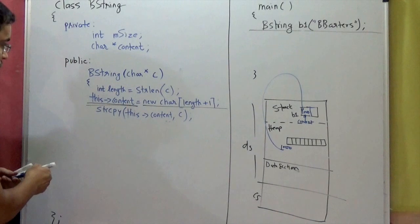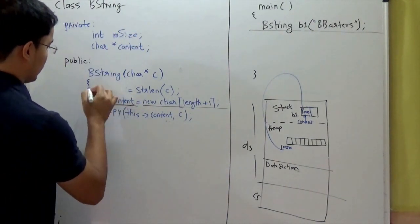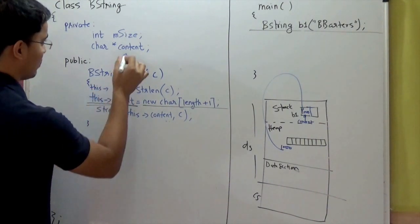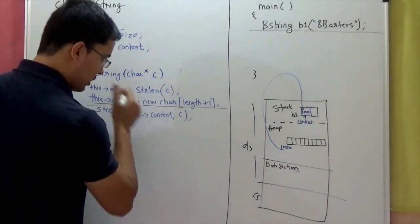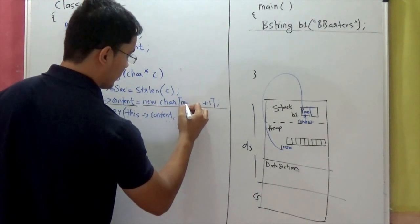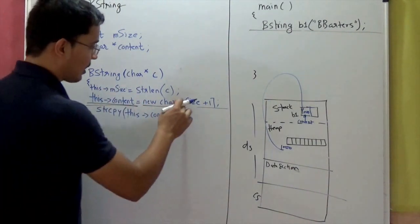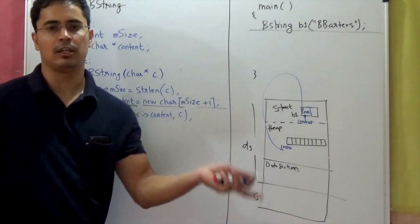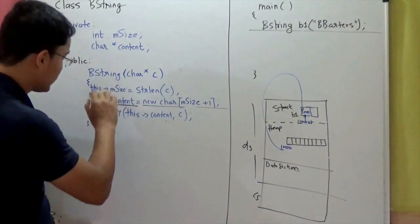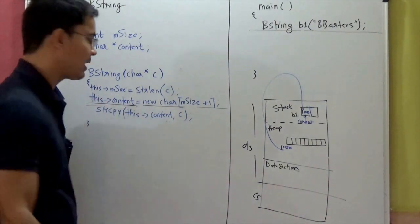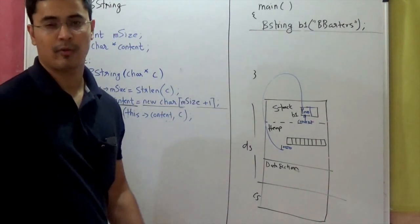We also need to initialize the other data member. So I'll say this arrow mSize equals strlen of input. And for the dynamic allocation I'll use mSize plus 1. Note that sometimes I use this arrow mSize and sometimes just mSize — they're interchangeable since the this pointer is implicitly available. For consistency you can use it either way, but here I'm using it based on the space I have on my whiteboard.